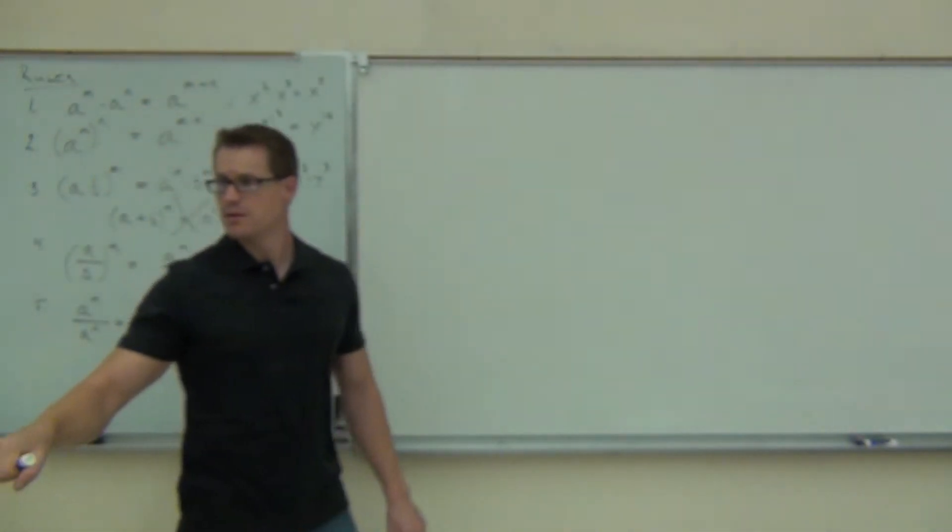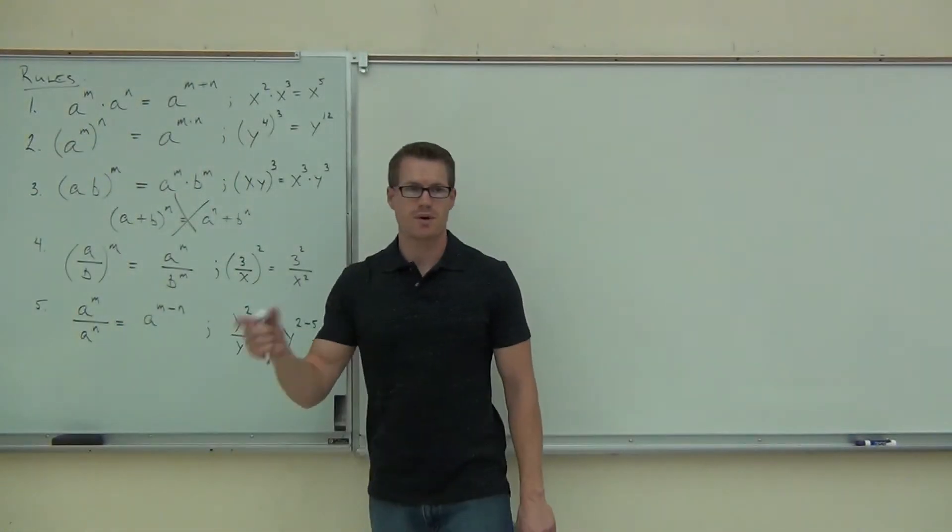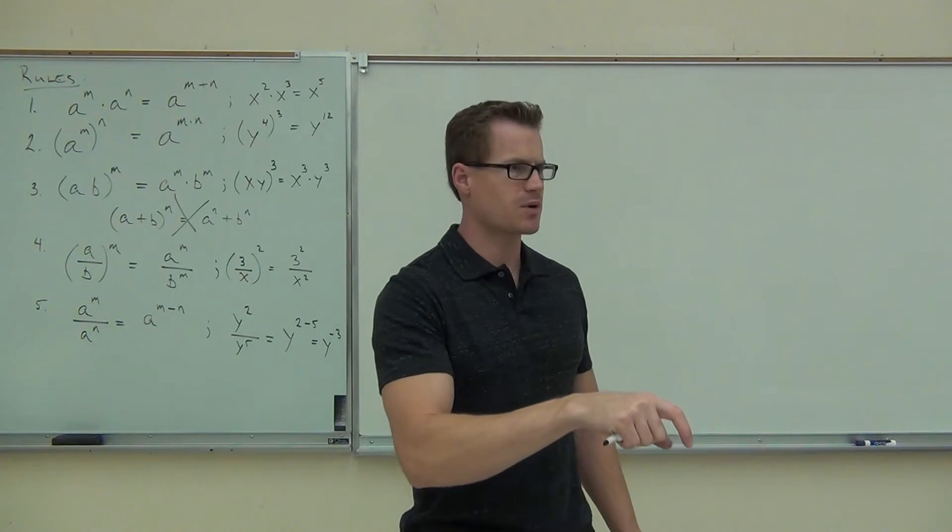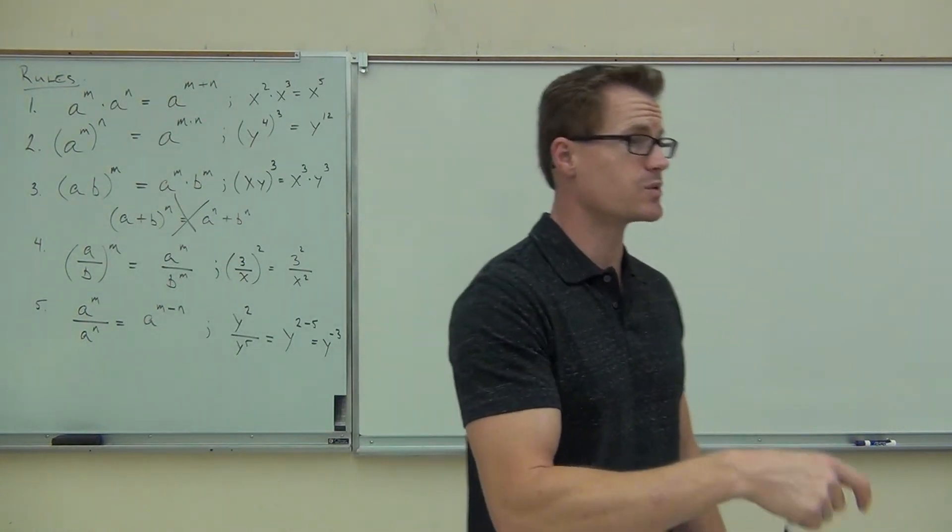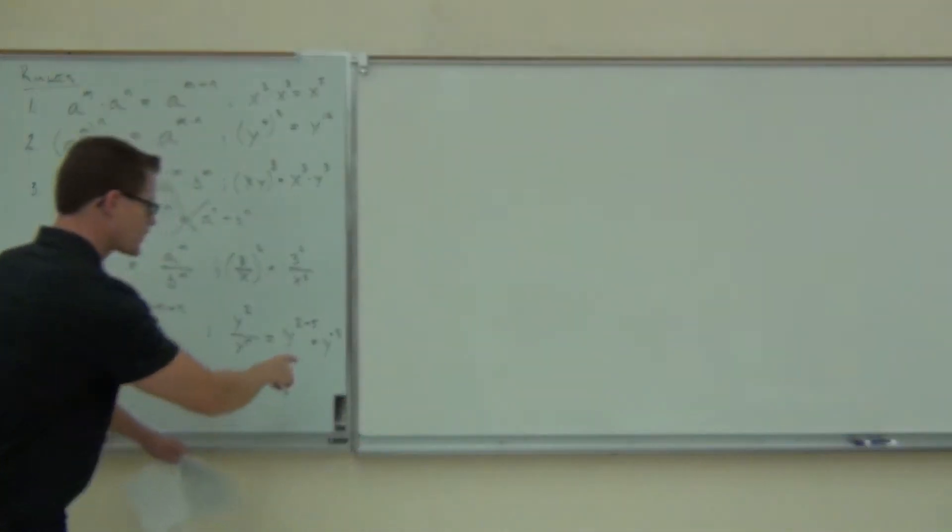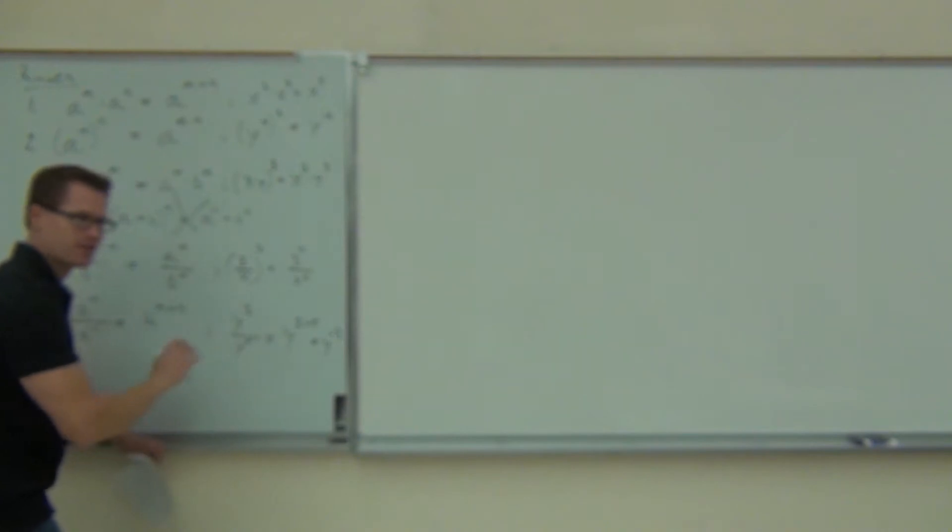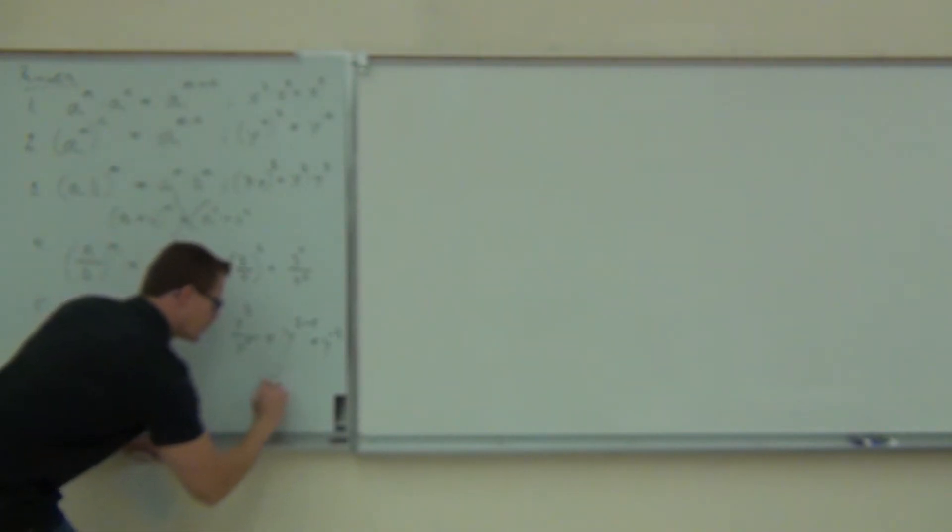So if I write that as a positive exponent, you remember doing that in the last part of class last time with those negative exponents? We changed those back to a positive. Instead of y to the negative 3, I don't like that so much, I want to do 1 over y cubed.